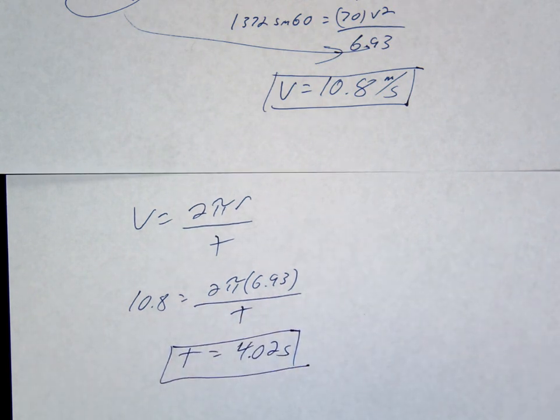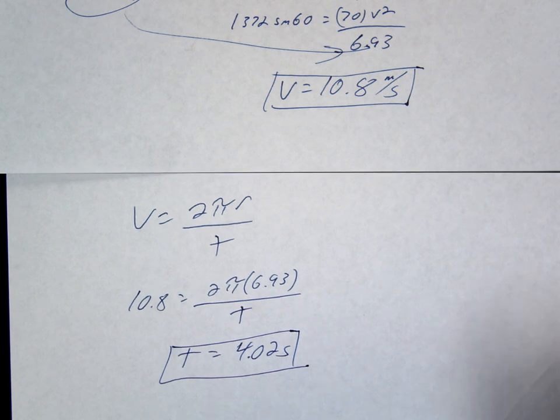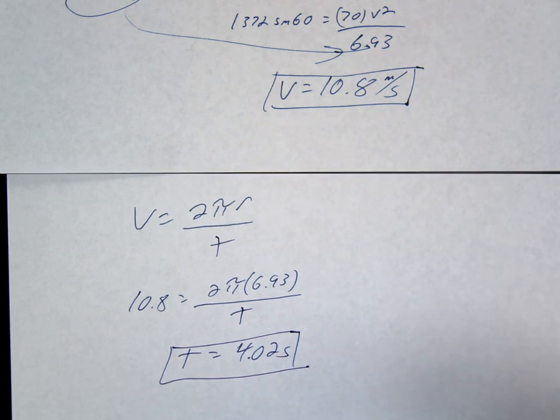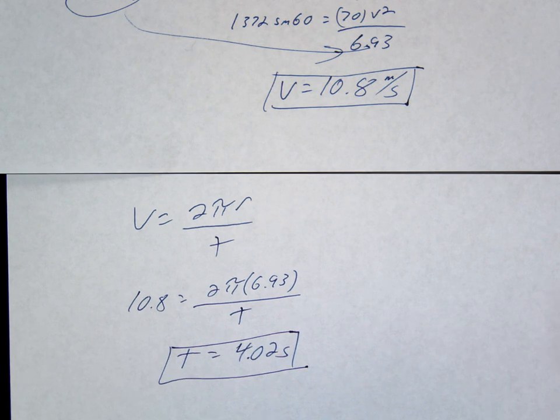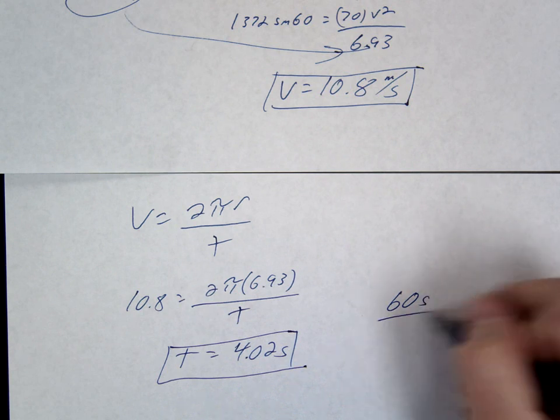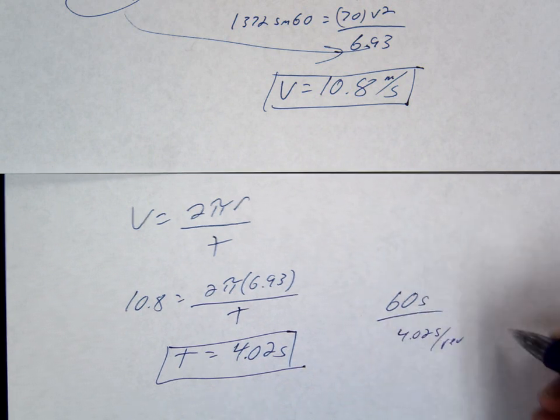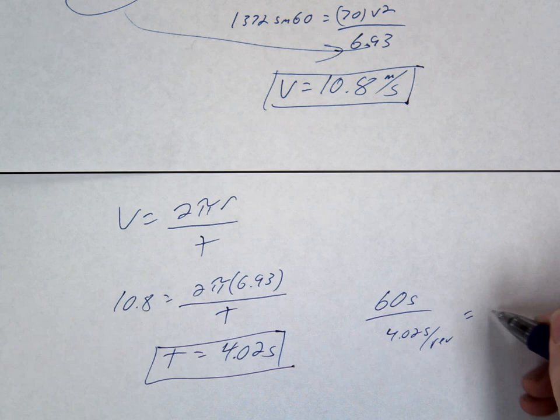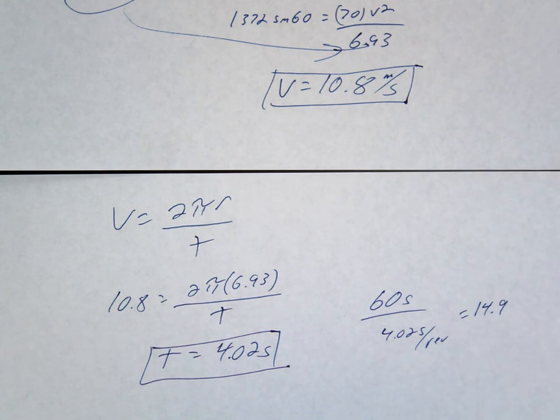Okay, and then you can find the RPMs. So, that's four seconds for one revolution. That means the RPM should be about 15. In one minute, you should make about 15 RPMs. 60 seconds divided by 4.02 seconds per rev is 14 point something.